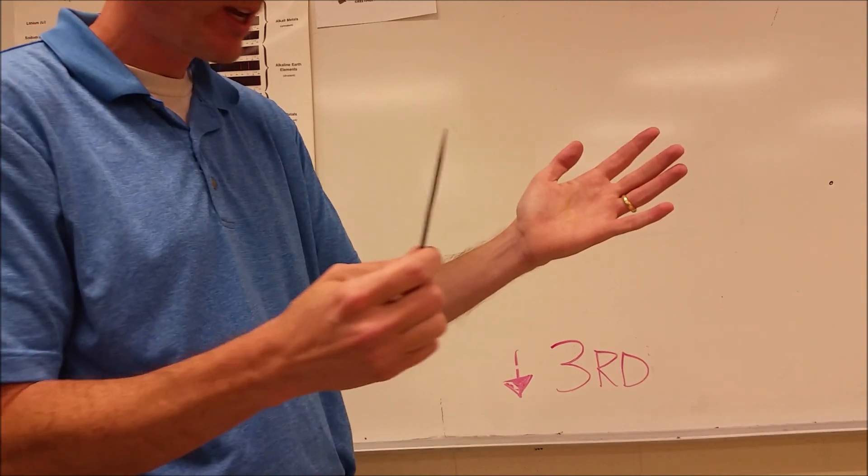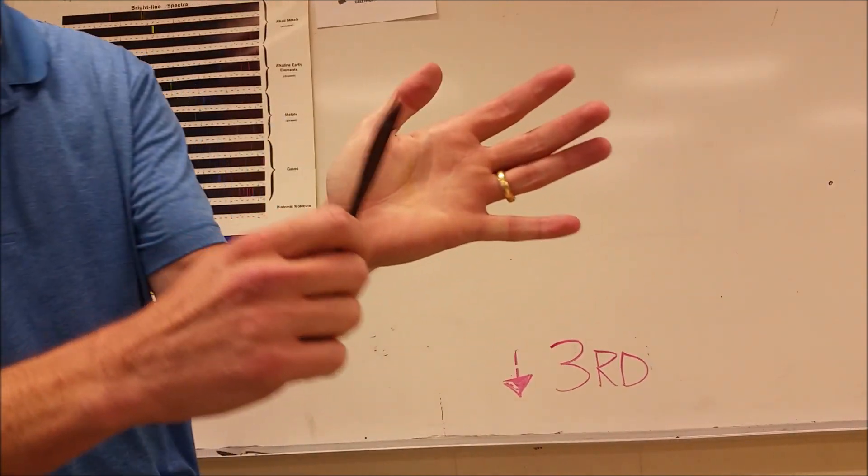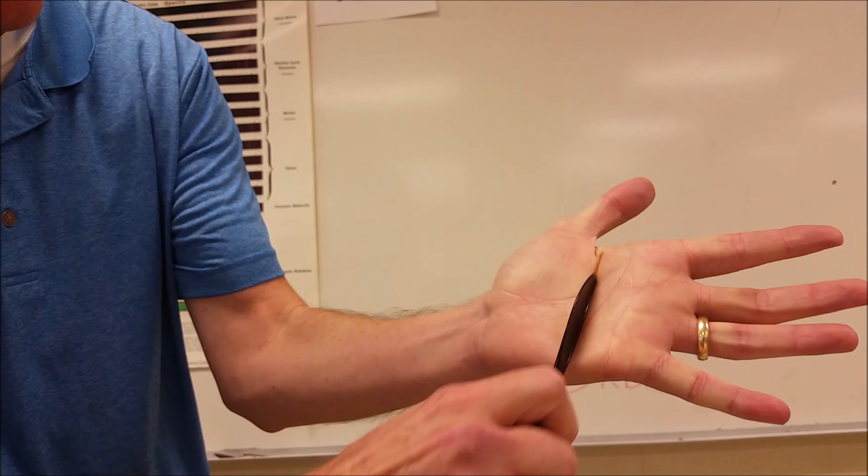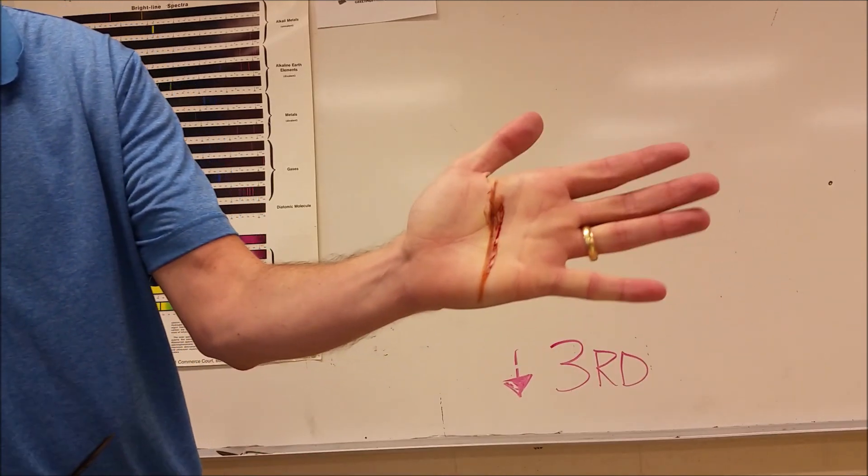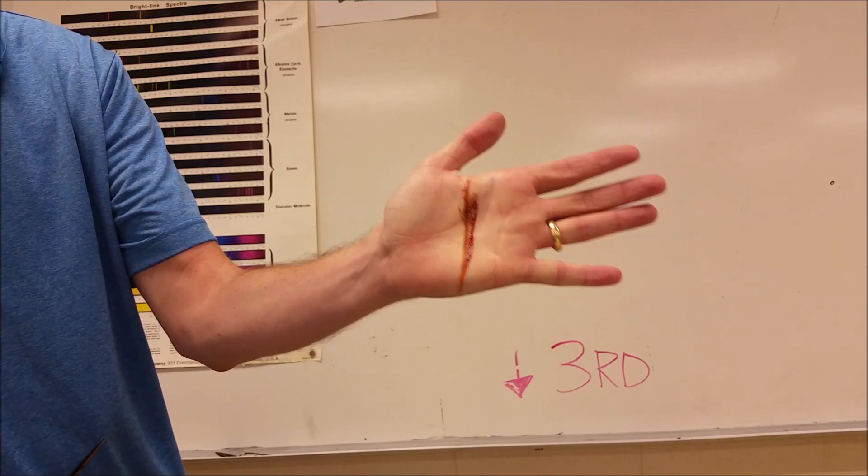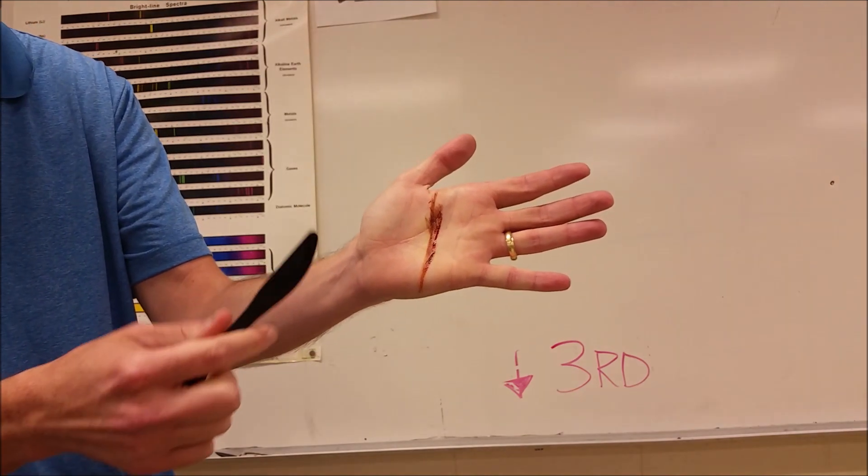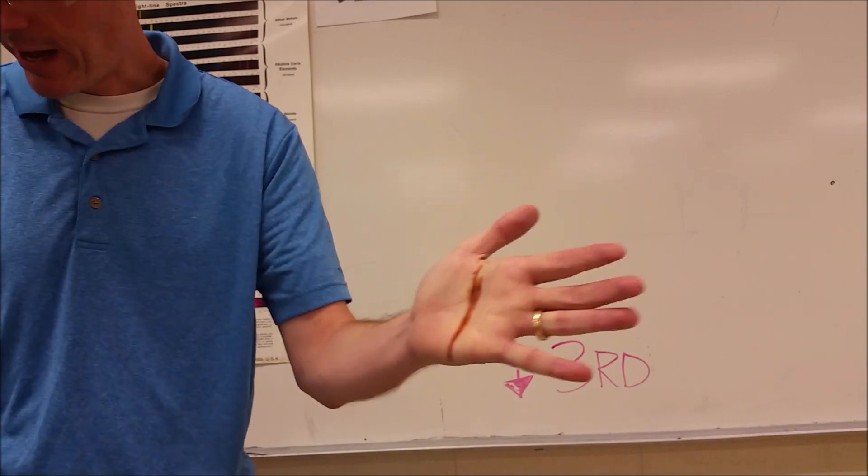So if I were to cut my hand with a knife, if I really kind of get in there, what you'll see is that the blood there is red because it's arterial blood and that's actually from the capillaries. You can kind of see that.